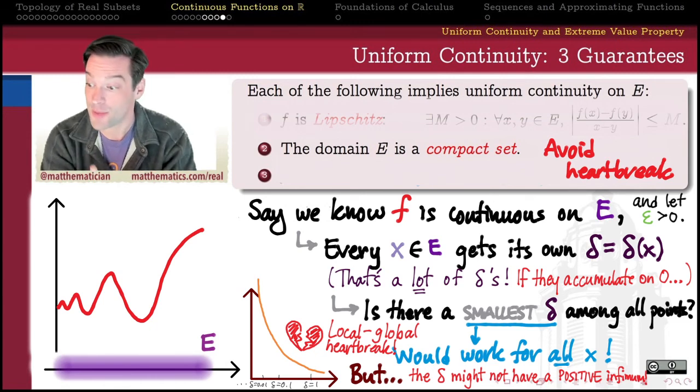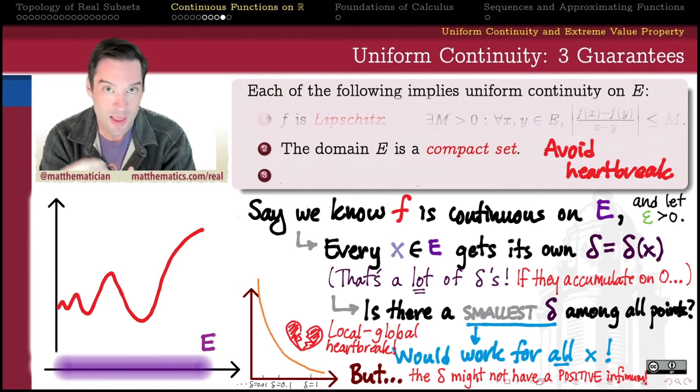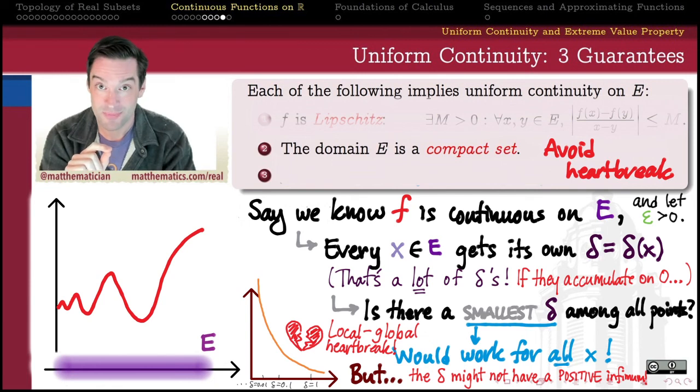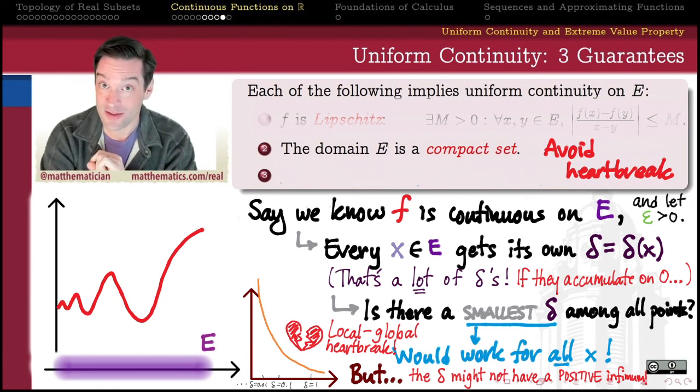So that's the idea behind the proof of this result. But as I say, this is probably the most frequently cited and frequently used results in all of uniform continuity. That a continuous function, when its domain is a compact set, is automatically uniformly continuous. If you want to know the proof, stick around until the next video.